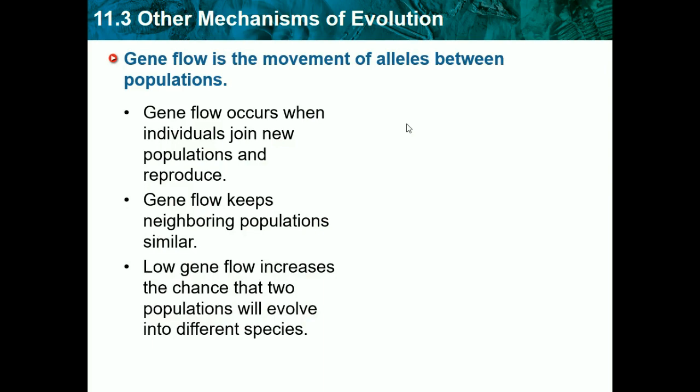For example, if two populations of tigers aren't exchanging genes frequently and never come in contact with each other, they're probably going to evolve into different species. Over time, without contact and interbreeding, they'll each adapt to their particular environment and eventually look totally different.